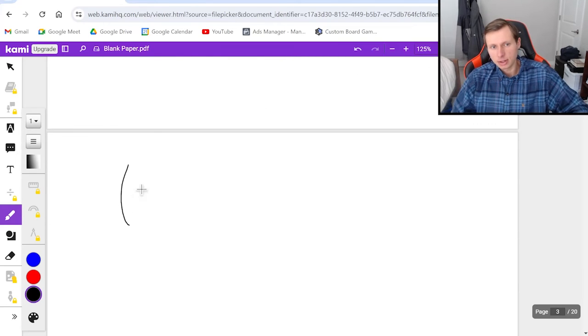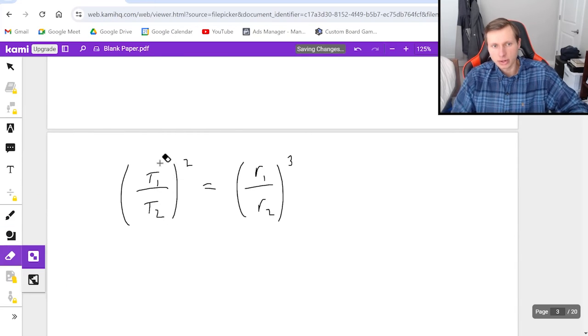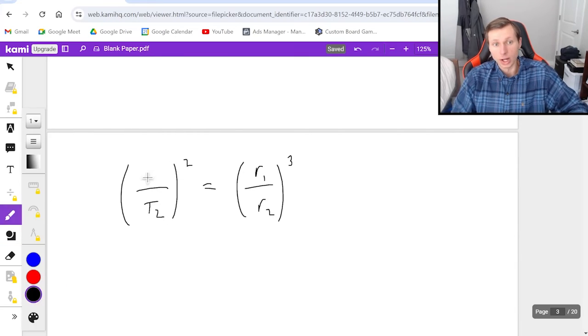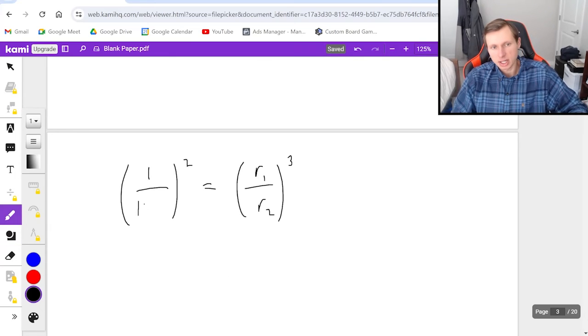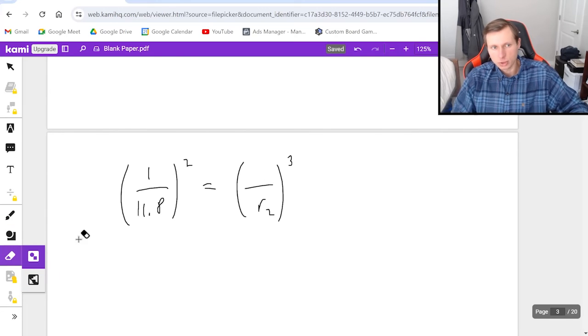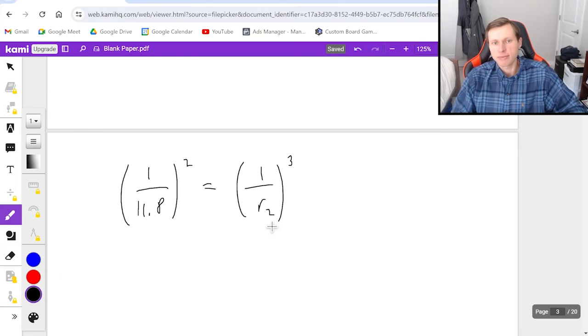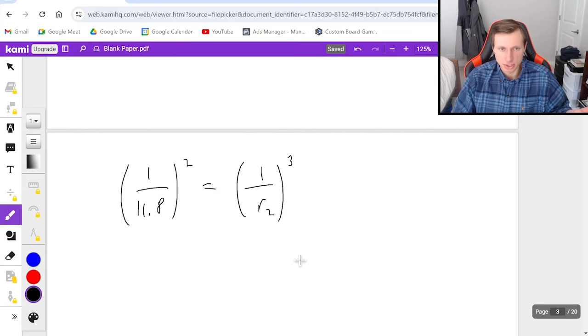So now filling out this formula I wrote down earlier, t1 is my Earth years, which I know is 1. t2 is my Jupiter years, which we said was 11.8. r1 is Earth radius, which we called 1, and now we just have to solve for r2, and that will basically give me my answer.